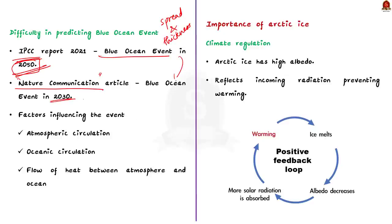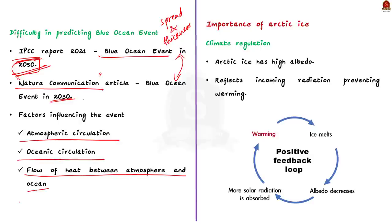Why is there such variation between the two predictions, and why is it even difficult to predict? This is because the decline of Arctic ice is difficult to model as it is influenced by different factors like atmospheric circulation, oceanic circulation, and the flow of heat between the two circulations. So even with the best supercomputer and a decent climate model, it is difficult to accurately predict the extent or spread of sea ice.